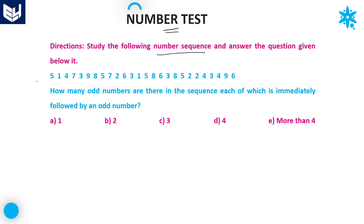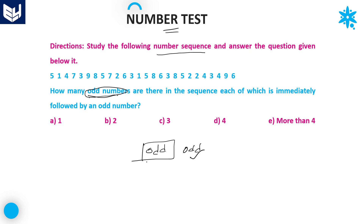Let's see the first question. A sequence of numbers is given. The question asks: how many odd numbers are there in the sequence, each of which is immediately followed by an odd number? We need to identify odd numbers followed by another odd number.